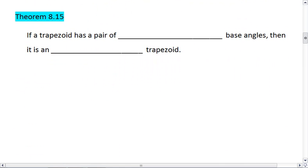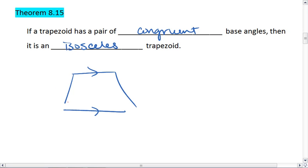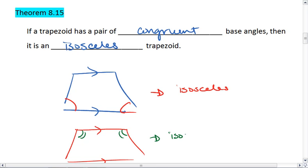Theorem 8.5 is very related to that theorem 8.14. If a trapezoid has a pair of congruent base angles, then it is an isosceles trapezoid. So let's say instead we have a trapezoid, and we know that one pair of base angles is congruent, then it is isosceles. And it doesn't matter which pair of base angles are congruent, the bottom or the top. In either case, as long as one pair is congruent, then we have an isosceles trapezoid.